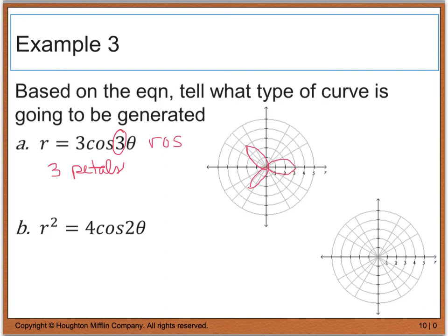Now for part B, we have r squared equals 4 cosine 2 theta. So this looks like the lemniscate. And this, when we graph it, is going to be something like this. And that concludes Section 10.8.